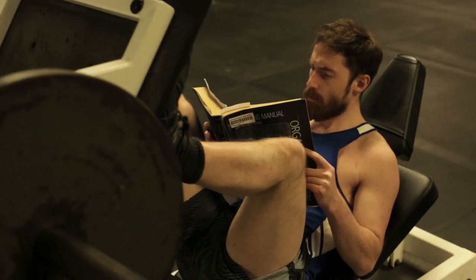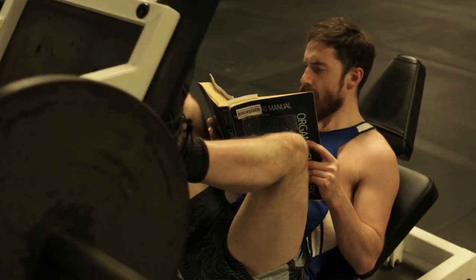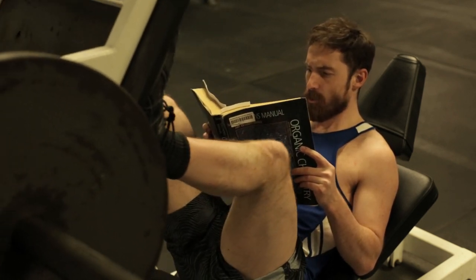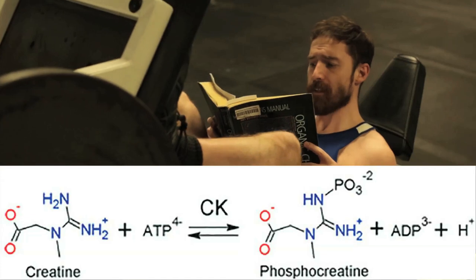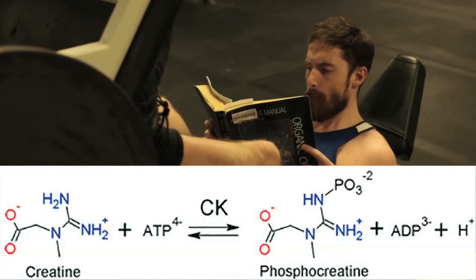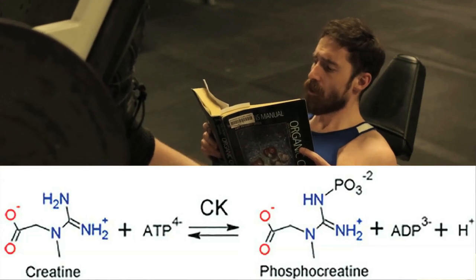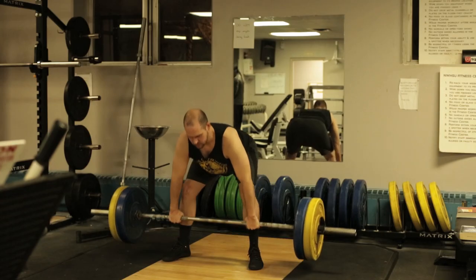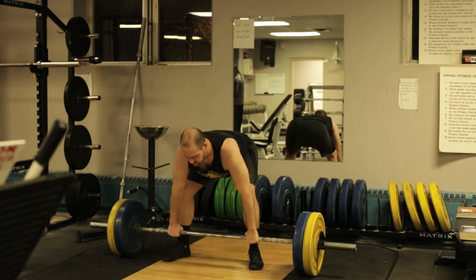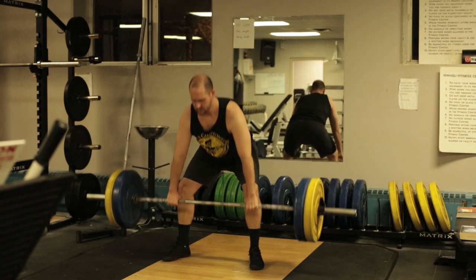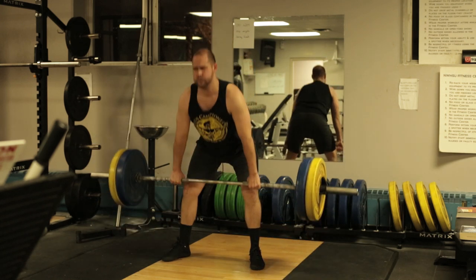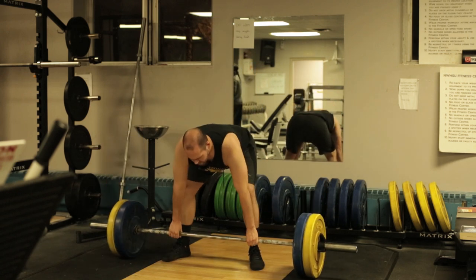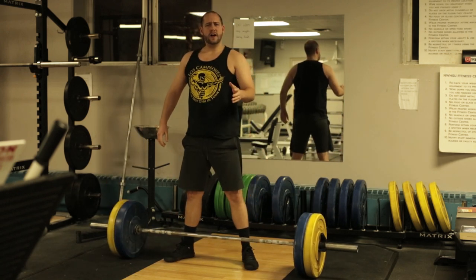Our muscles use ATP to power muscle contraction. For the first 10-15 seconds of activity, we use stored phosphate groups attached to creatine, or phosphocreatine, to resupply ATP from ADP by adding a phosphate group with the help of creatine kinase. This is the fastest supply of energy, and as a result, provides the most power.